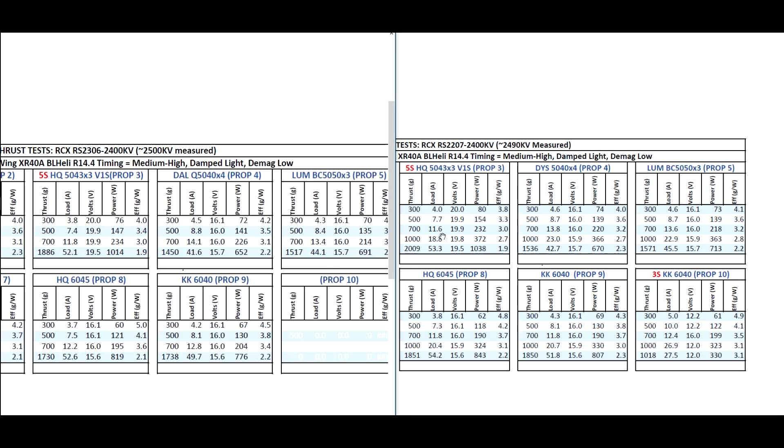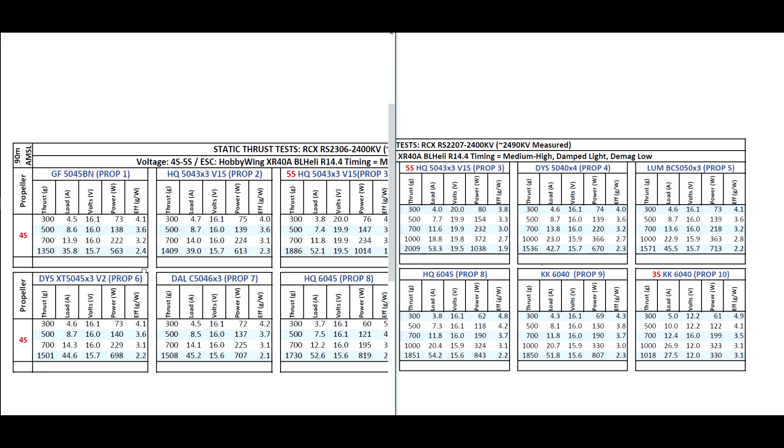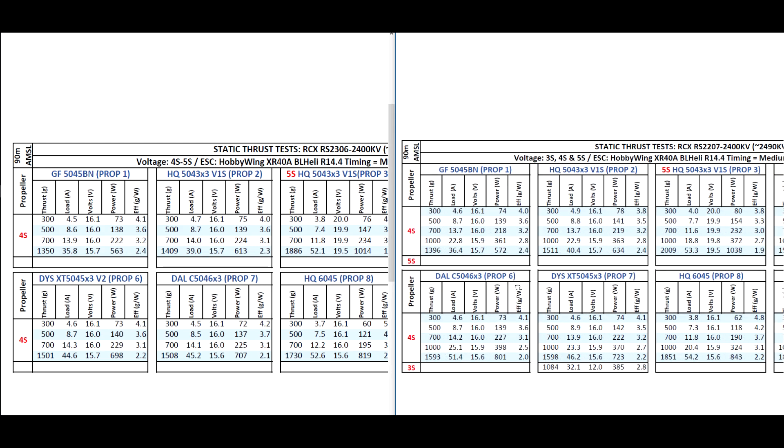So the story is the same as we move on to the props. The 2207 is getting better performance. Let's move on to the DAO 5046x3. Almost 100 grams. The YS-XT 5045, also the same gap. And then we move on to the bigger props.